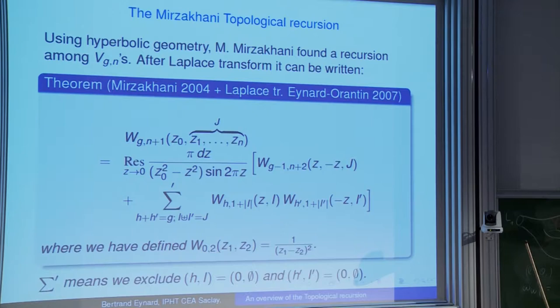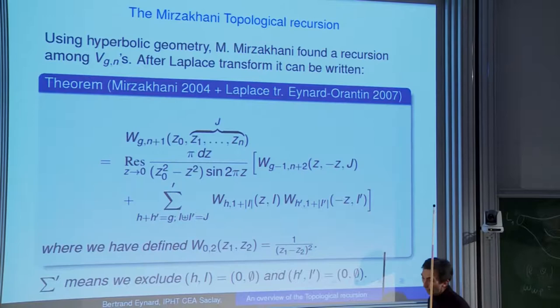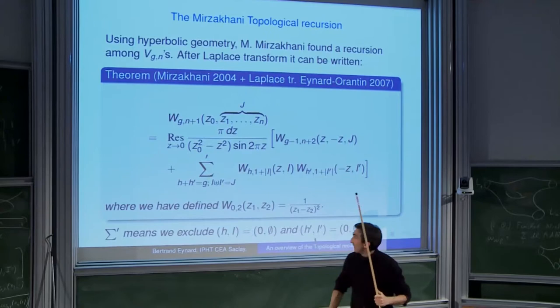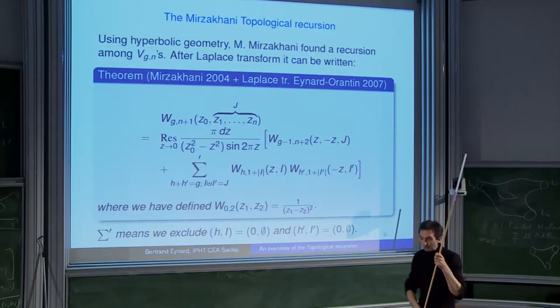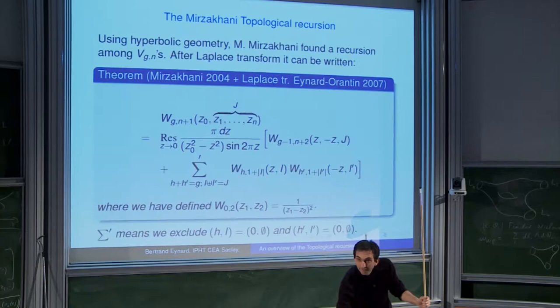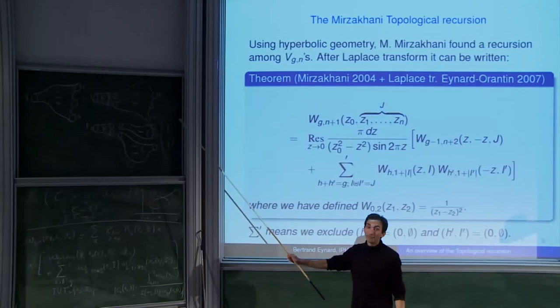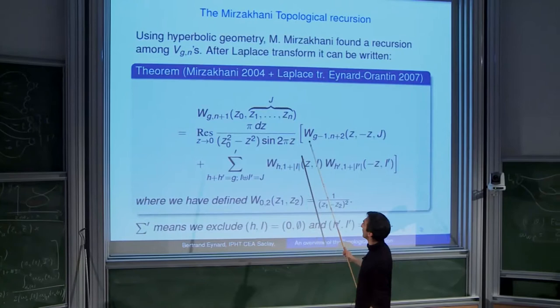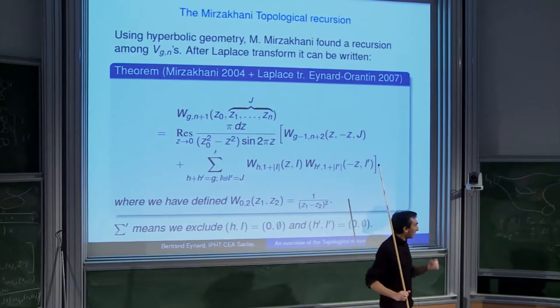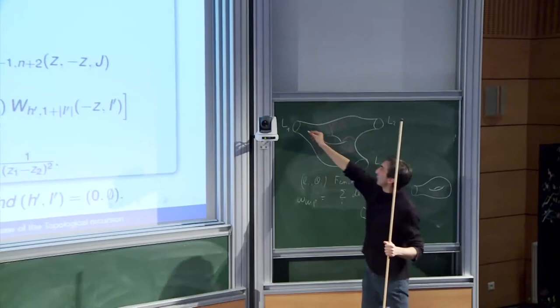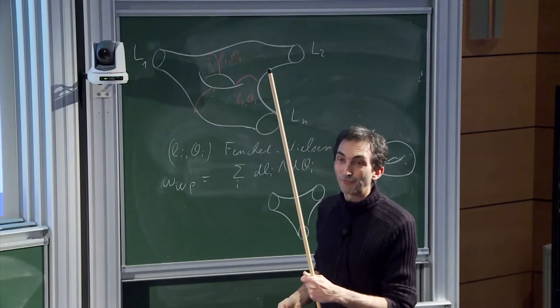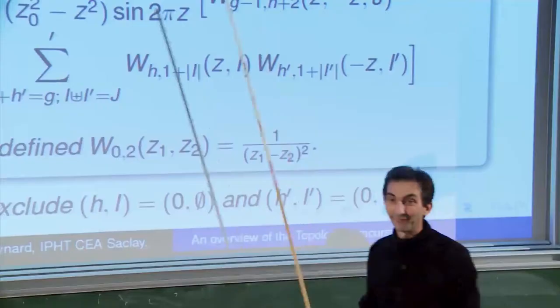What was found by Maryam Mirzakhani in 2004 is that there is a very nice recursive relationship among those volumes. Mirzakhani wrote the recursion relation directly in terms of volumes. If you Laplace transform it, you get a recursion equation for the Laplace transform. It's just an integral: you can compute some W_{g,n} in terms of some W's which you have already computed before. Mirzakhani proved it by studying all the geodesics going from one boundary to another and using the McShane relation — it's a very indirect proof, and there is no picture corresponding to that.